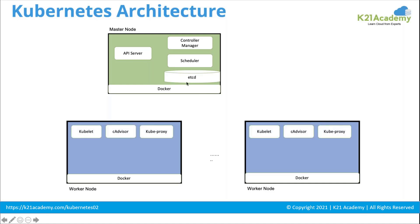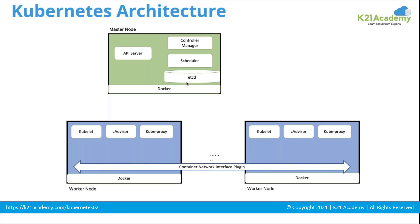The worker nodes come with the agent — kubelet is the agent. cAdvisor comes with it and helps in monitoring the resources utilized by containers running on that particular node. Kubeproxy provides the ability to reach those containers. The master is the control plane part and kubeproxy is the data plane part. To stitch up the complete networking, there is a container network interface plugin that connects all nodes in the cluster, including the master.